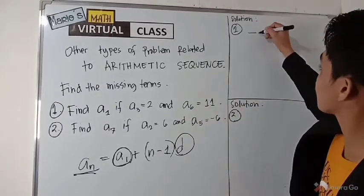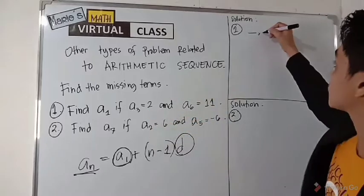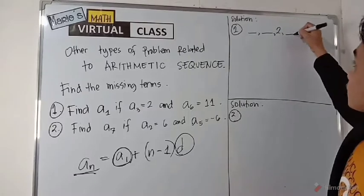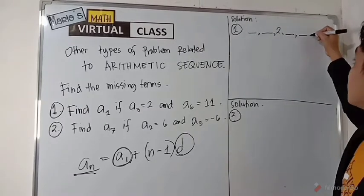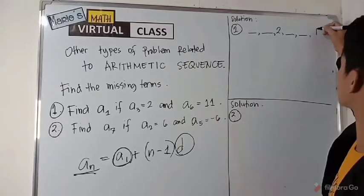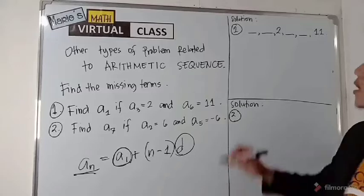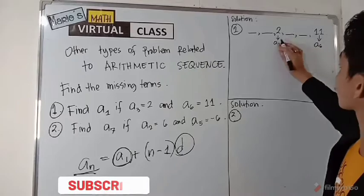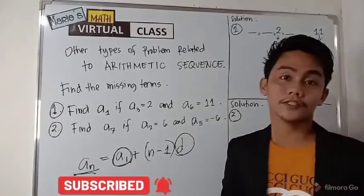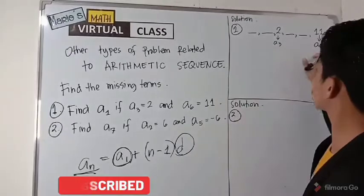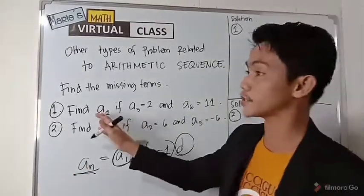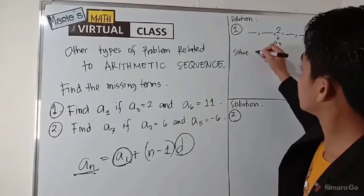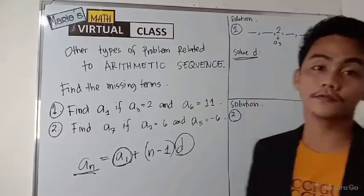If you analyze this, you don't have the first term, you don't have the second term, but you know your third term which is two. You don't have the fourth or fifth term, but you know your sixth term which is eleven. So with this information — the third term and the sixth term — we can use these two values to solve for the first term. First, you need to solve for the common difference.